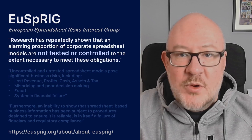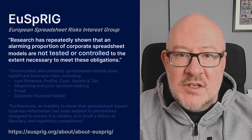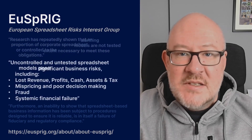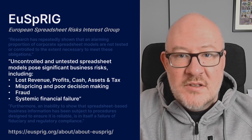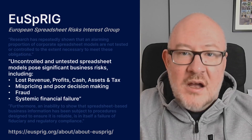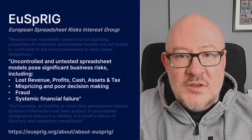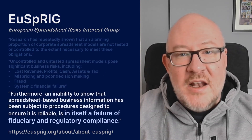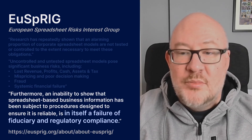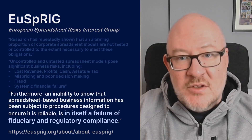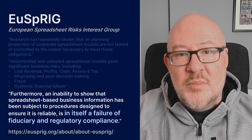Their research shows that a large proportion of these models are not tested or controlled to an extent that meets these obligations, and therefore they pose risks to the business such as loss of cash and assets, mispricing of sales products, fraud due to tampering, or systemic financial failure due to over-reliance on flawed models. This leads EUSPRIG to state that failure to ensure high-quality spreadsheet documents, or even failing to be able to prove the quality of spreadsheet documents, is in itself a failure of the compliance duties.